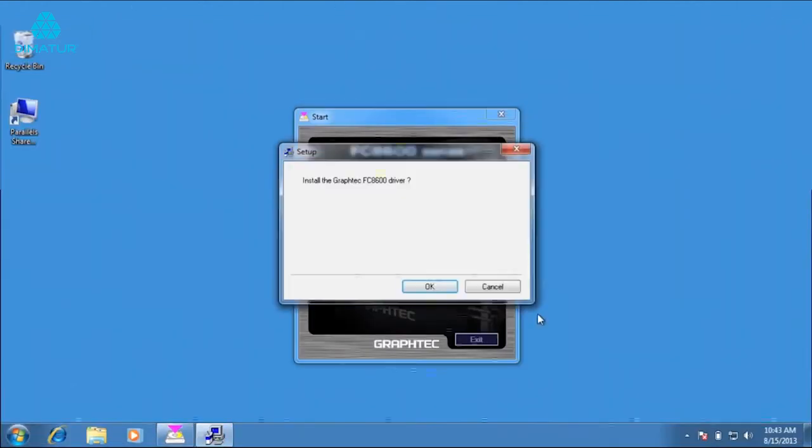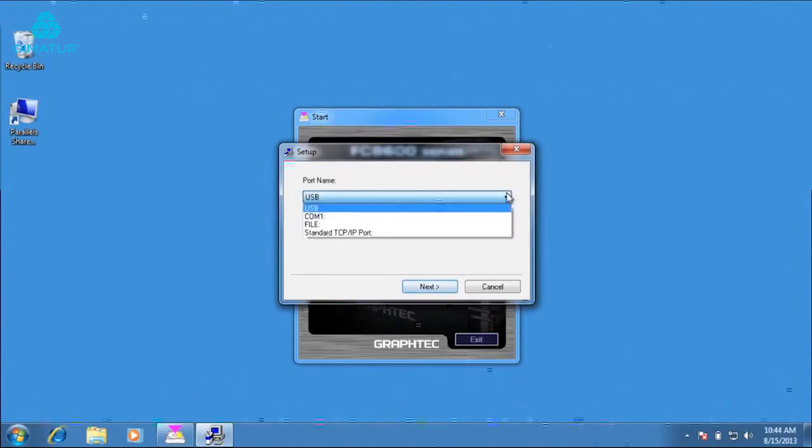At this point, the installation program is asking if you'd like to install the FC8600 driver. Click OK. Click Next, and Next again. This window will open up, asking what port will be used to communicate to the cutter. Choose the port you will be using. In our case, we will be using the USB port. And then click Next.